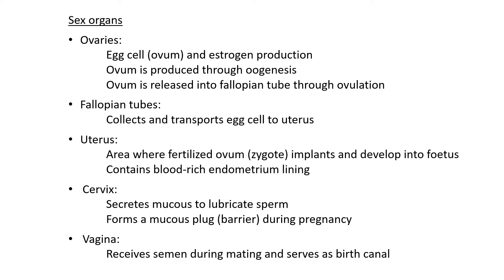The cervix is a narrowing area of body tissue that secretes mucus to help lubricate the sperm when it enters the female's body. It also forms a mucus plug or barrier during pregnancy to protect the developing fetus from bacteria, viruses, or additional sperm — nothing can enter the uterus while it is plugged. Finally, the vagina receives semen during mating and also serves as the birth canal when the calf has to come out.